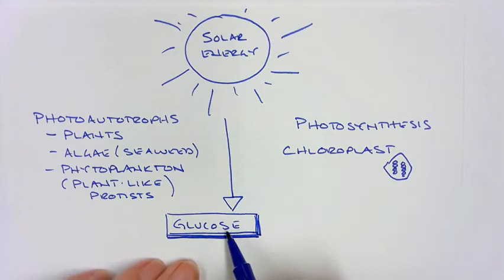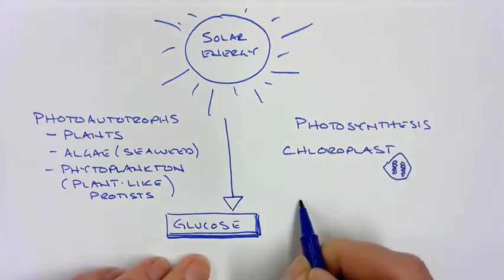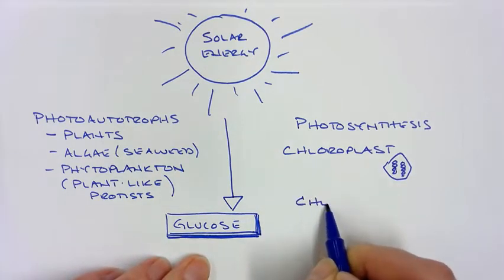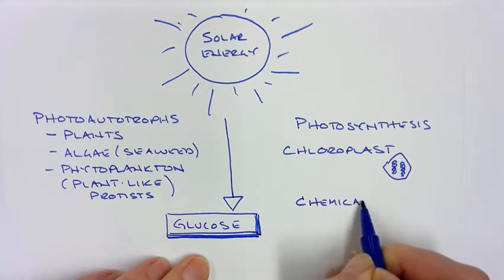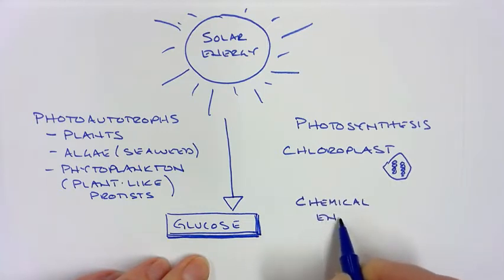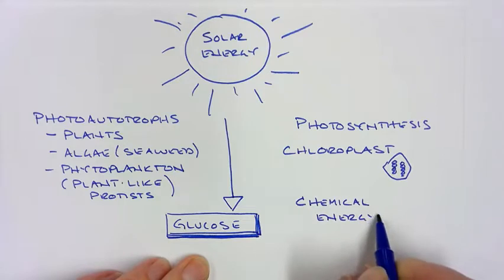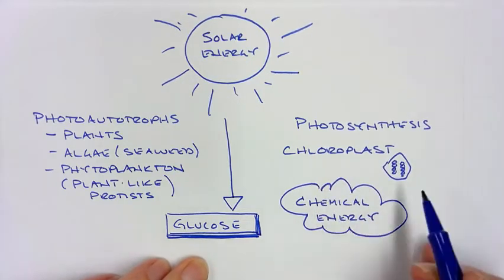So once we have glucose, glucose is basically a form of chemical energy. This form of chemical energy cannot be used right away by a cell—it has to be converted. Here's our chemical energy.